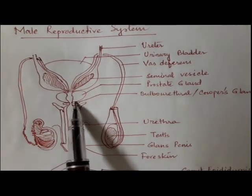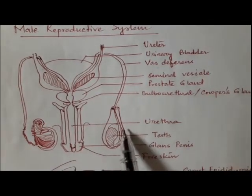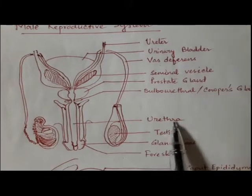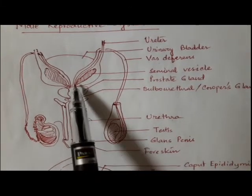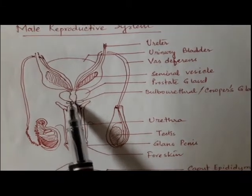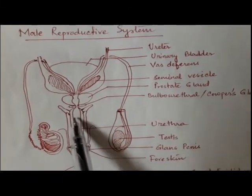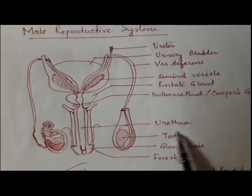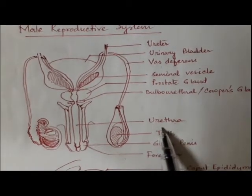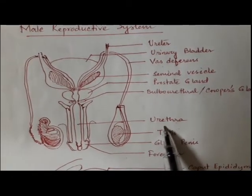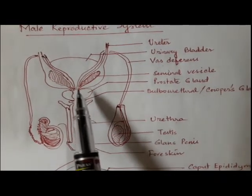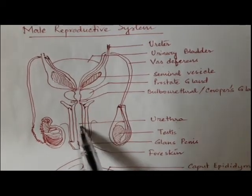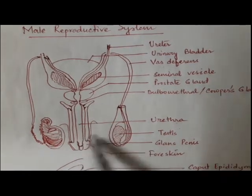Next, we will talk about the urethra. Urethra actually arises from the urinary bladder. It is around 20 centimeters long and we can divide it into four regions: the prostatic, the membranous, and the penile region.